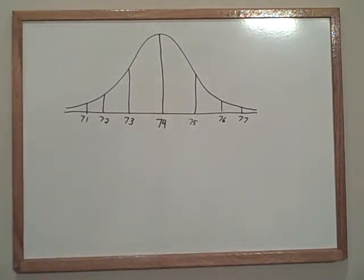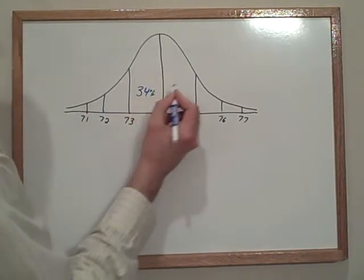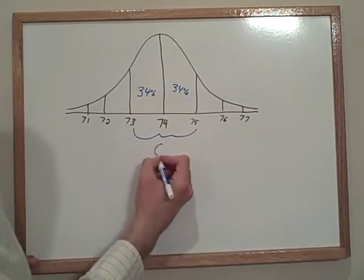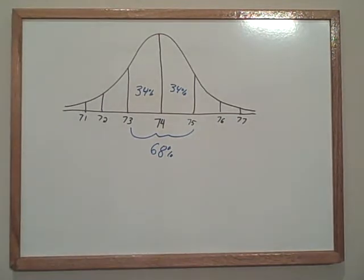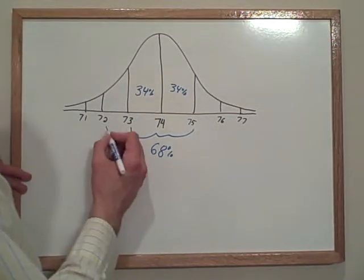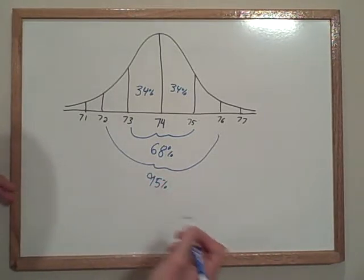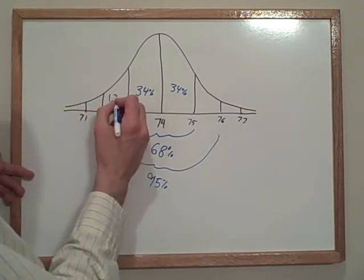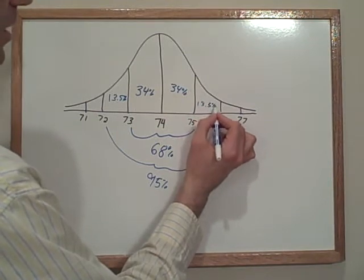And we can label this the same way we did the other one with 34% and 34%, knowing that 68% of your population falls within one standard deviation of the mean. And we can do this again with 95%, and by the time we do this we would have just really worried ourselves to death over it. 13.5% and 13.5%.